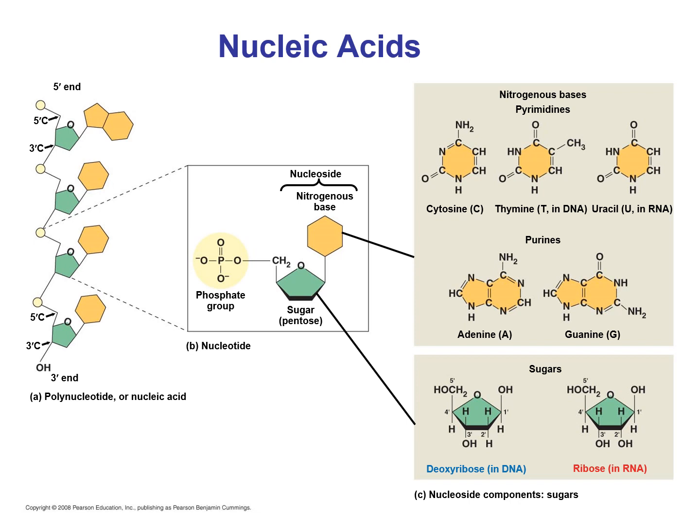Let's have a quick look at the structure of nucleic acids. Like other macromolecules, they're made up of monomers that are stuck together one at a time through dehydration synthesis. The monomers are known as nucleotides. A nucleotide consists of three parts: a phosphate group, a sugar — a pentose sugar, which means it has that pentagram shape — and also a nitrogenous base.